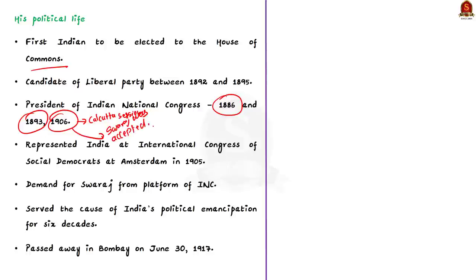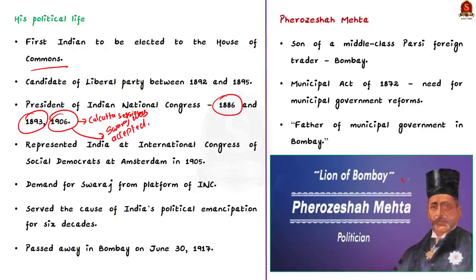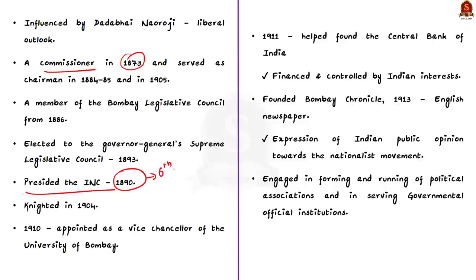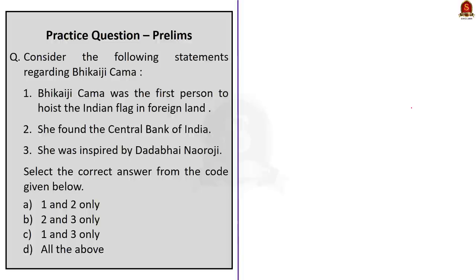Now let us move to Pherozeshah Mehta, who is called the Father of Municipal Government in Bombay. He drew up the Municipal Act of 1872 and in 1873 became the Municipal Commissioner of Bombay. He presided over the sixth session of the Indian National Congress in 1890 and was knighted in 1904. He is one of the famous moderate leaders. He published an English newspaper called the Bombay Chronicle, in which he published accounts of the treatment of Indians in South Africa and Gandhi's passive resistance movement there.